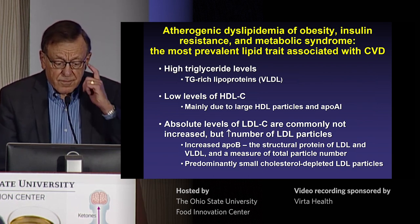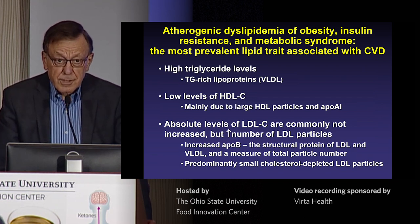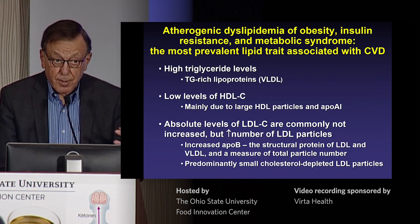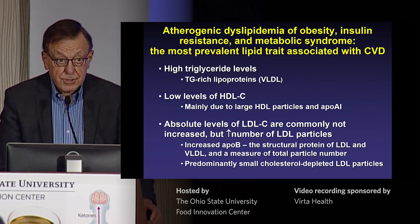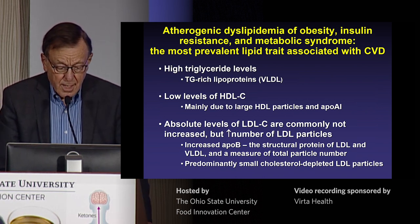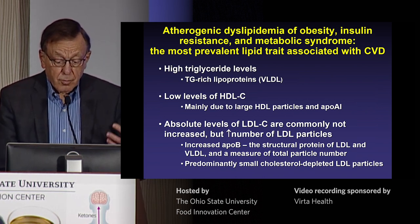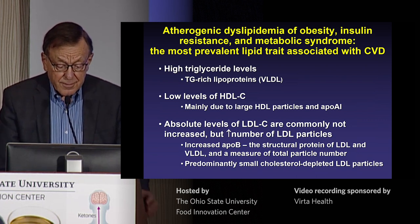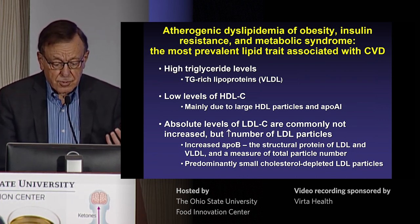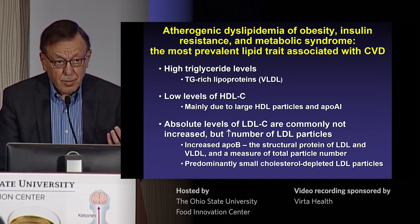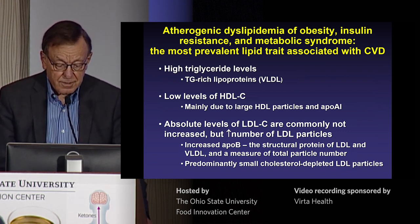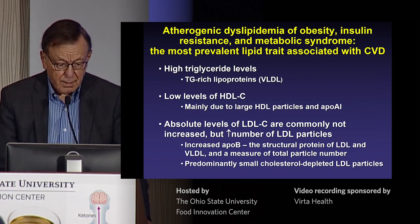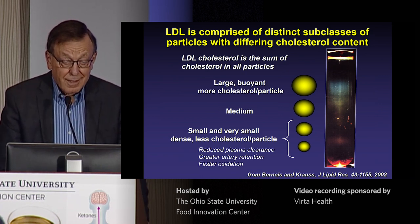This relates importantly to LDL cholesterol. Absolute levels of LDL cholesterol are commonly not increased, but there is an increased number of LDL particles, which are what are transporting the cholesterol in the blood. This is also reflected in increased levels of apoprotein B — the structural protein of LDL — which is a measure of total particle number for both LDL and VLDL. The LDL found in atherogenic dyslipidemia consists of small, cholesterol-depleted LDL particles, and it's this lower cholesterol content per particle that explains why absolute LDL levels are not elevated while particle numbers are.